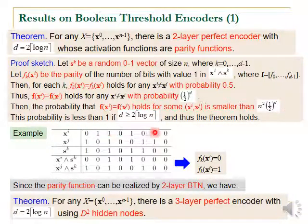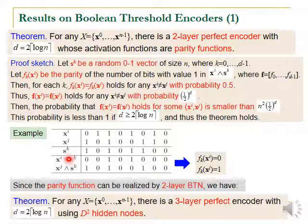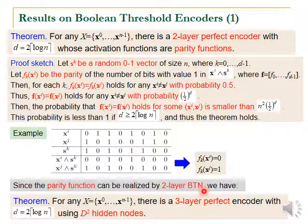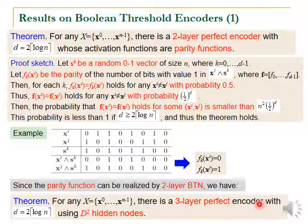Please look at the figure. For example, consider x_i and x_j, and a randomly generated binary vector s_k. The bitwise AND of x_i with s_k gives a certain result, and x_j with s_k gives another. In one case there are two ones so the parity is 0, and in the other case there are three ones so the parity is 1. This illustrates the construction. It is well known that the parity function can be realized by a two-layer Boolean spatial network, giving us a three-layer perfect encoder.